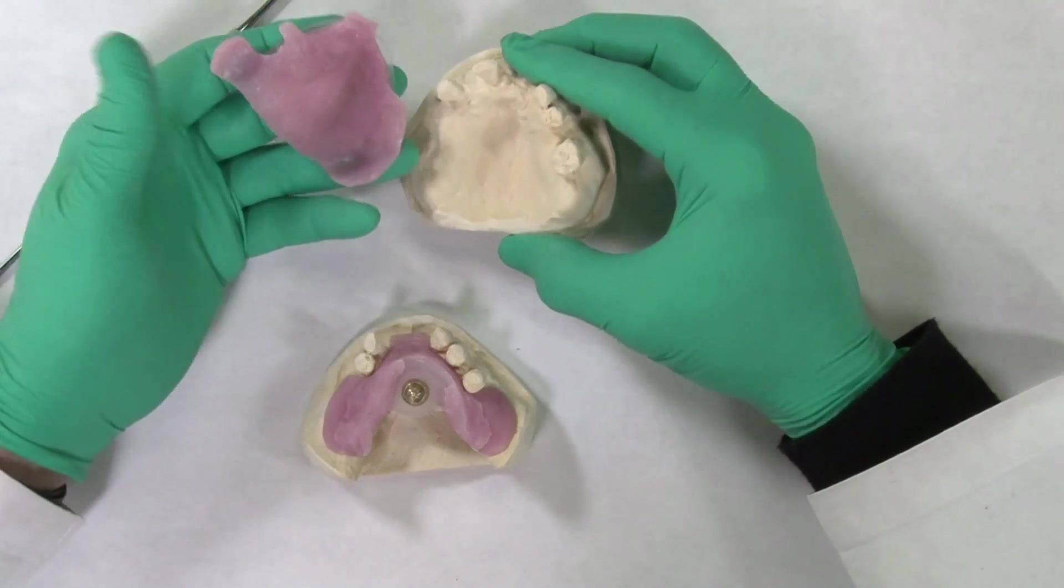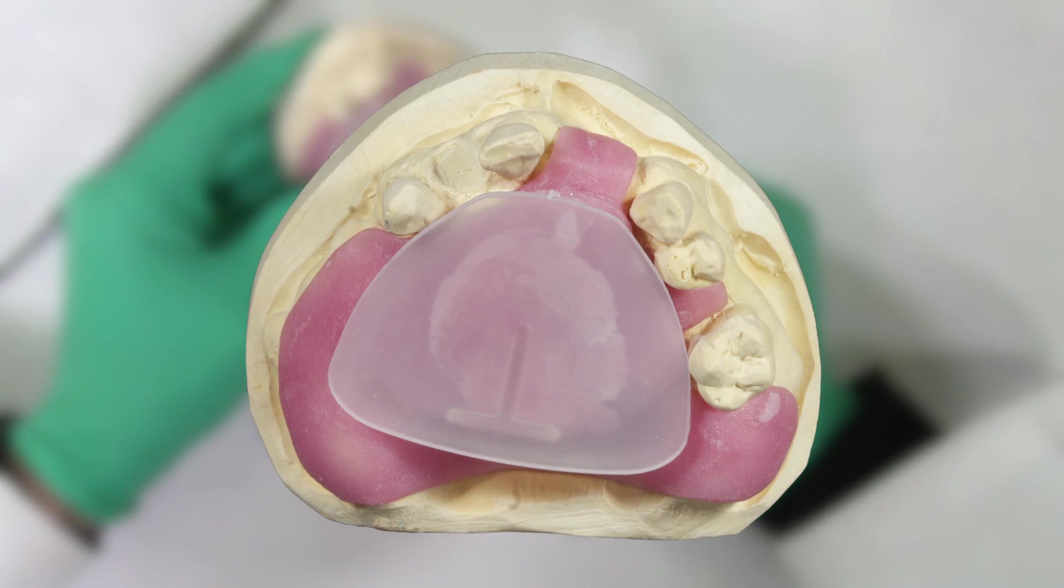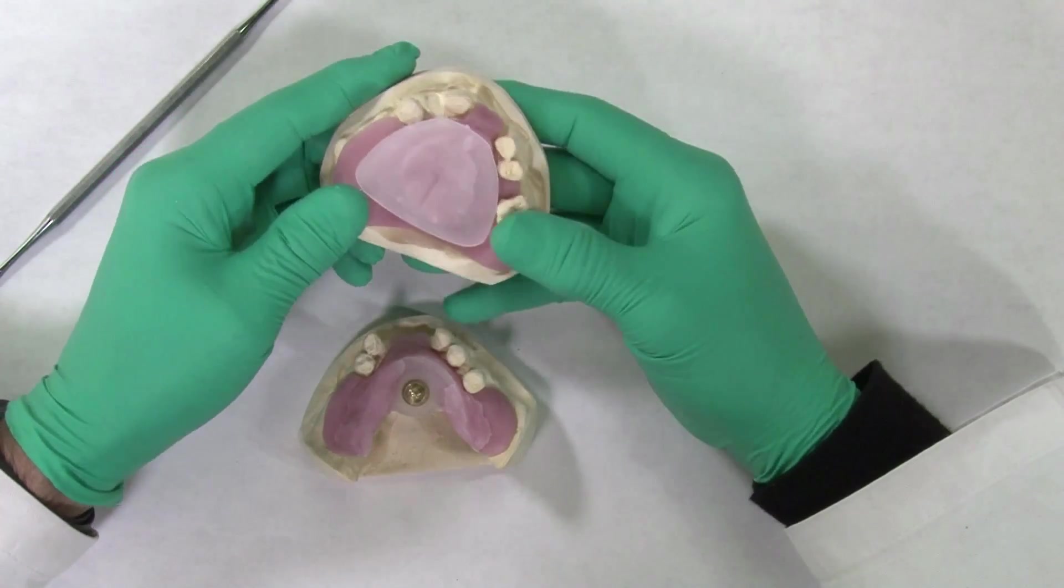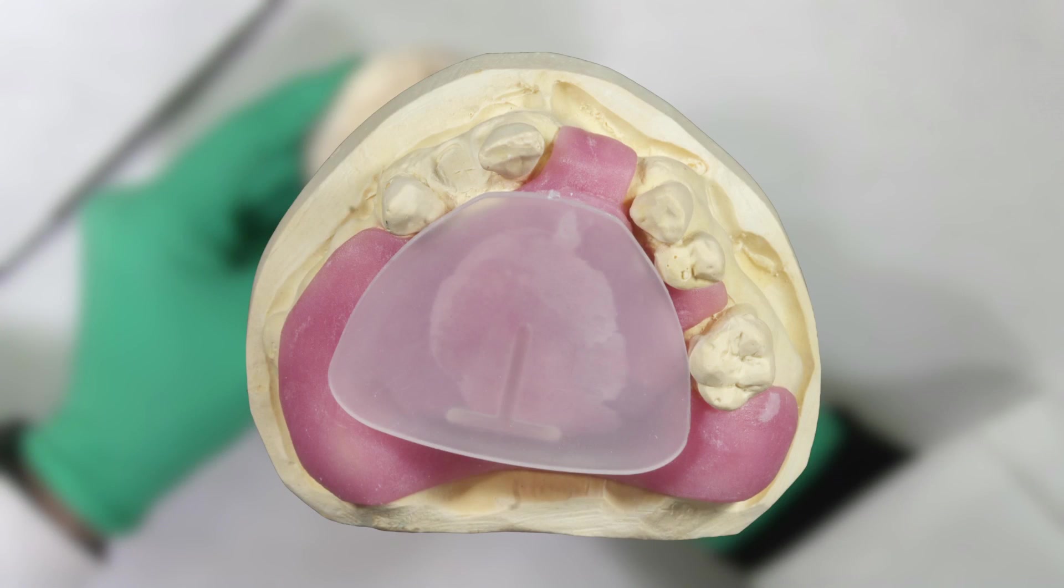Similarly, on the upper arch, a base plate is fabricated with tissue stops in the edentulous areas and palate. A striking plate is then attached, once again staying below the occlusal plane. The striking plate can be easily trimmed with an acrylic burr to avoid impinging upon the teeth.